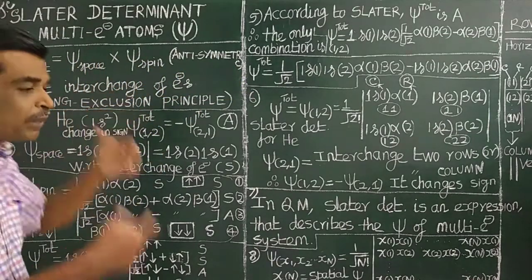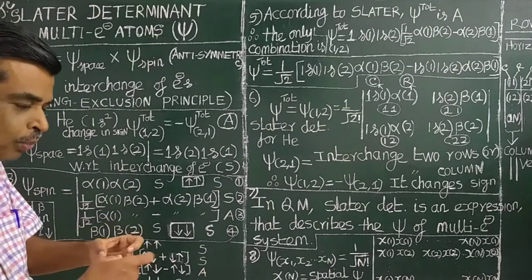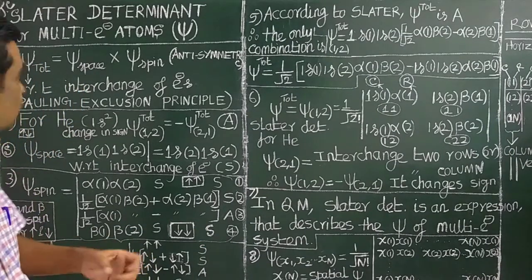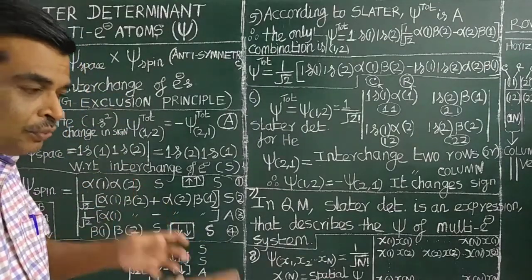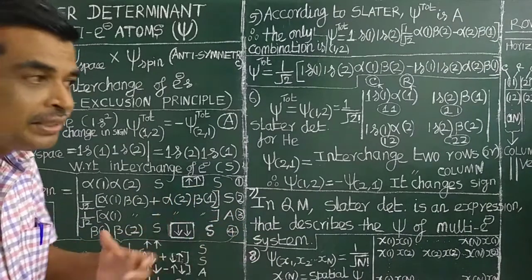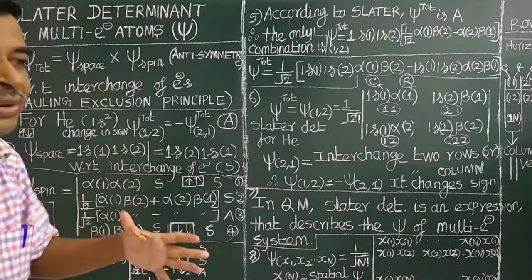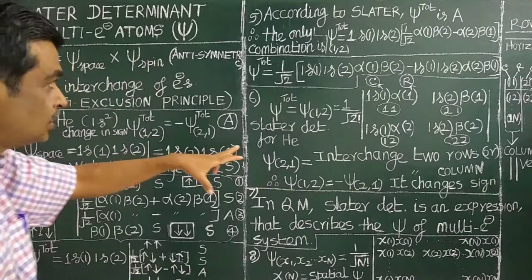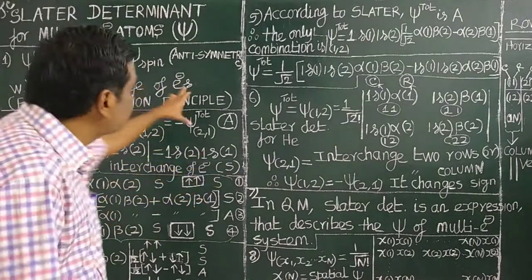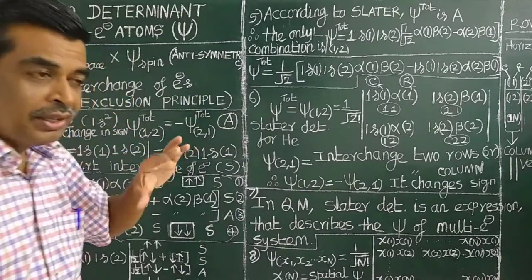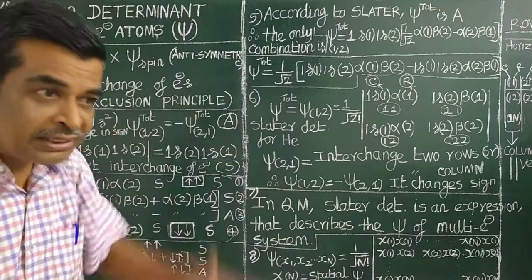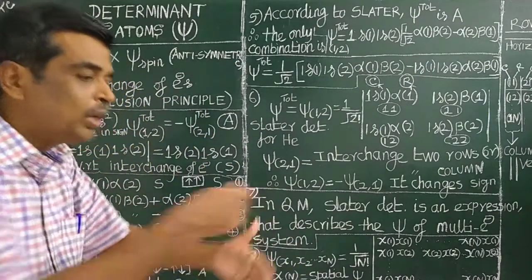The total wave function is anti-symmetric with respect to interchange of electrons. This is the consequence of the Pauli exclusion principle — this is the quantum mechanical definition of the Pauli exclusion principle. That is, the total wave function of a multi-electron atom is anti-symmetric with respect to interchange of electrons.